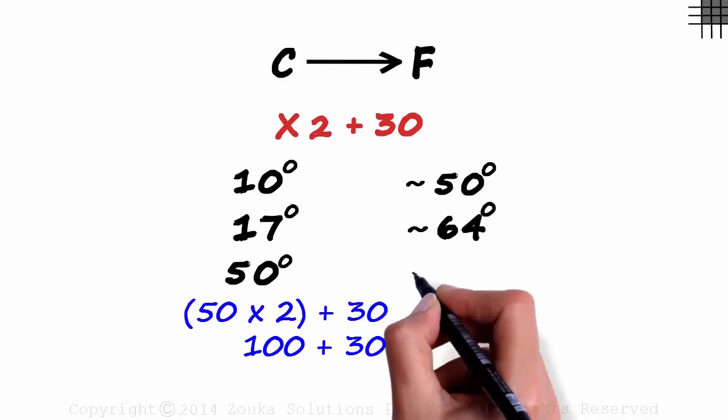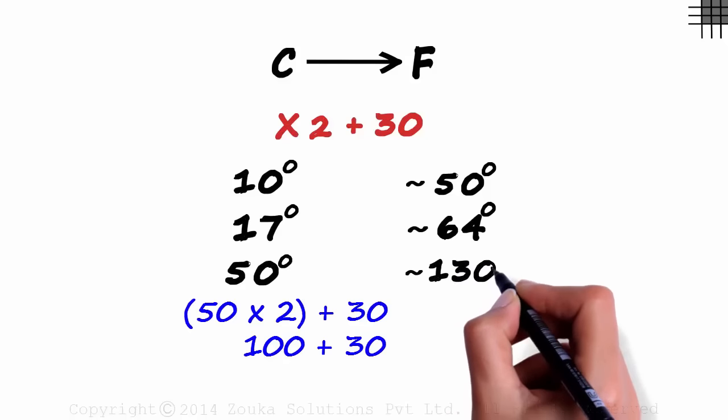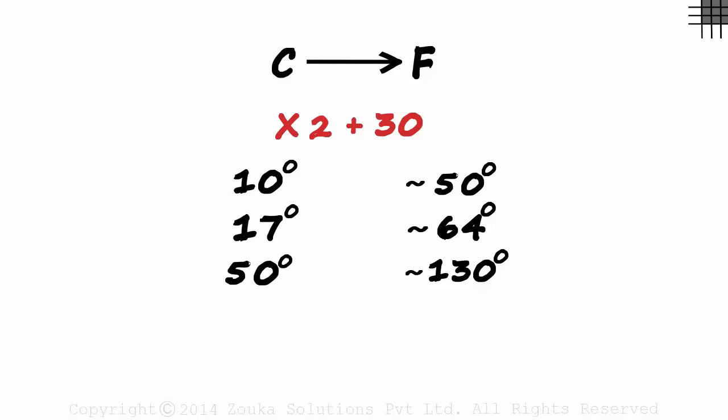Say 50 degrees Celsius. 100 plus 30 is 130 degrees Fahrenheit. The exact answer is 122, a difference of 8 degrees Fahrenheit.